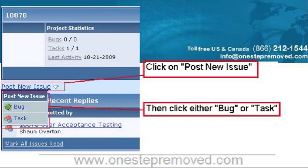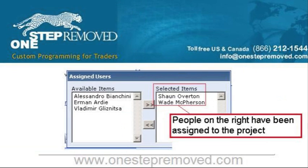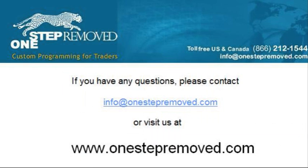One very important item is that you need to assign users if you want us to know about it. So if you post a new bug but you don't tell Sean Overton and your programmer that this issue exists, we'll never get an email that this was posted. So it's very important that when you post one of these you always assign a programmer. If you have any questions, give me a call. My number is 866-212-1544, and again this is Sean Overton with One Step Removed.